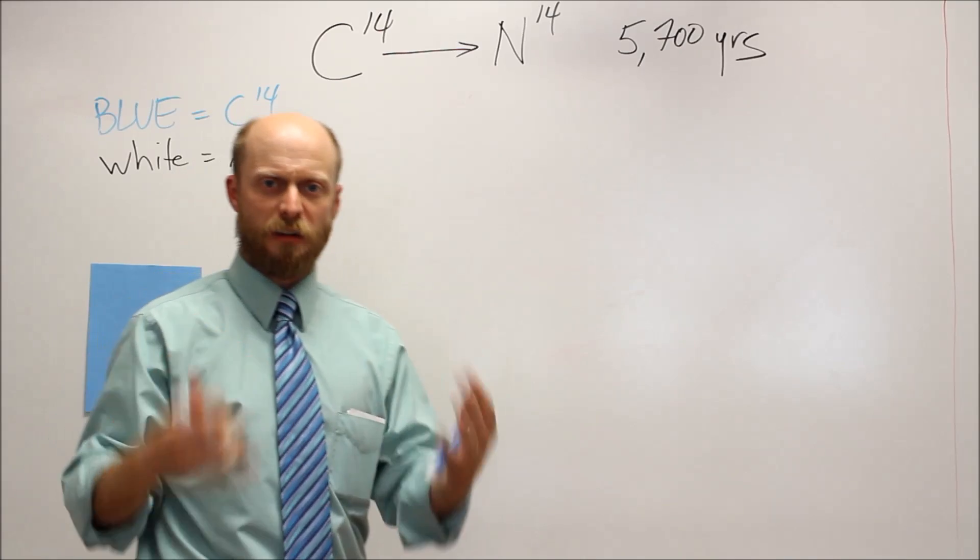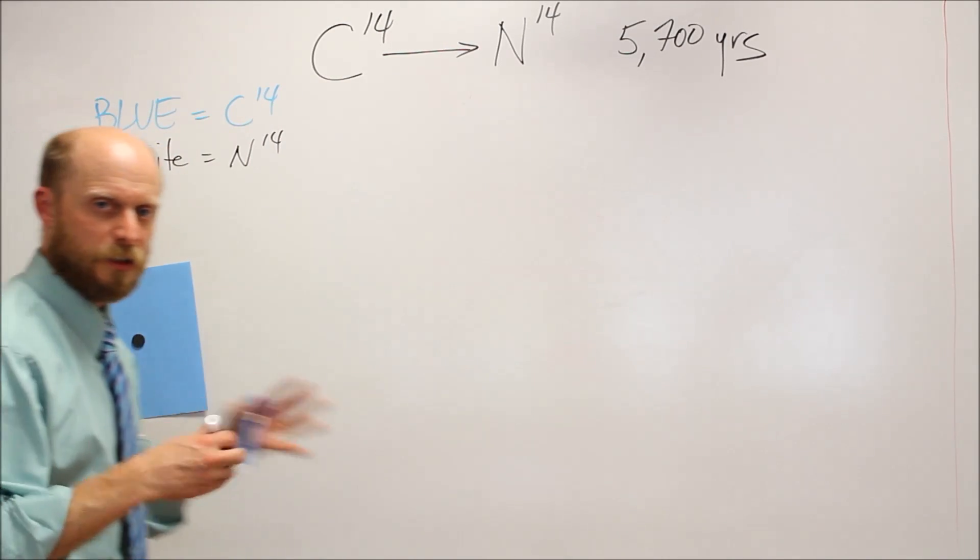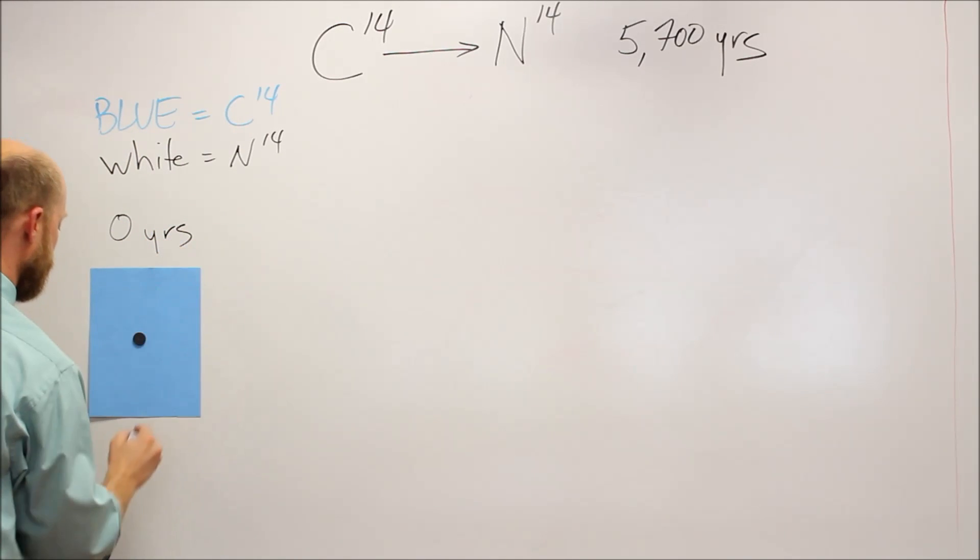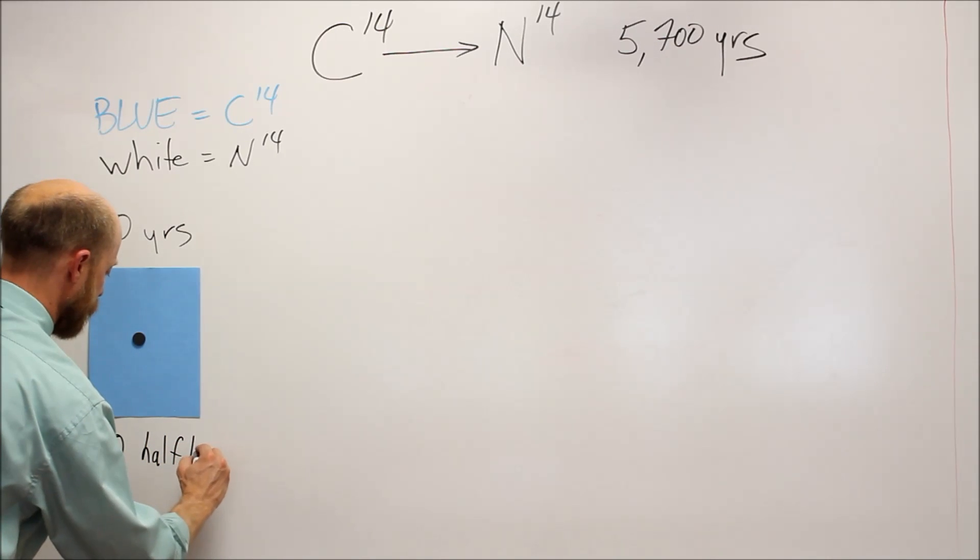You start out, and I'm going to say that at zero years, right when that tree is growing, what you have is all carbon-14, no nitrogen-14. So, I will put down, you know, zero years have gone by and zero half-lives have gone by.